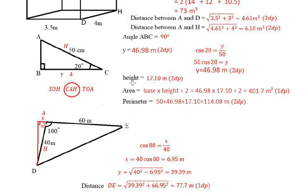Just another thing about rounding: you look at the third decimal place, and if it was 5 or more, you would round the second decimal place up by one. Otherwise, if it's 4 or less, you just take the two decimal places and cut everything else off on the calculator. Don't write down a whole lot of decimal places — 1 or 2 d.p. are enough. Now, we worked out the height to be 17.10 metres.